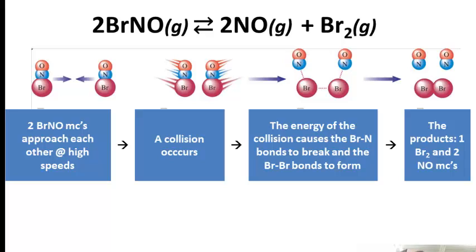After they do that, so we see in the first one, here they're approaching each other at high speed. So that's the first thing. Then number two, a collision occurs. So they actually collide together. They hit each other.